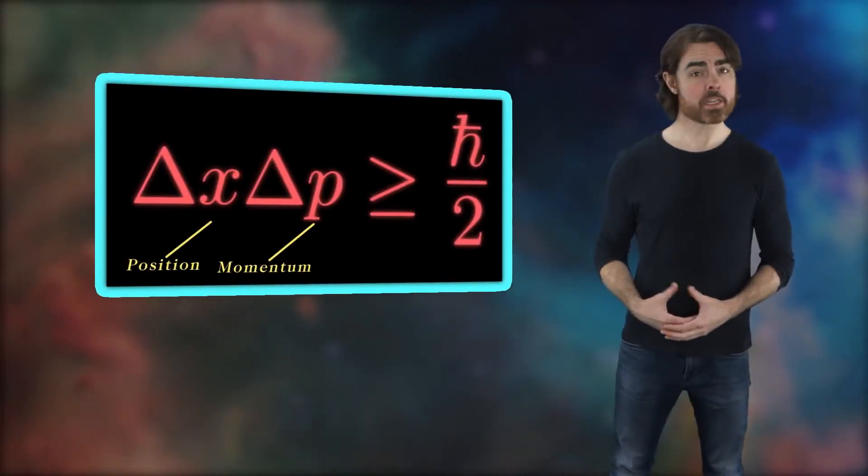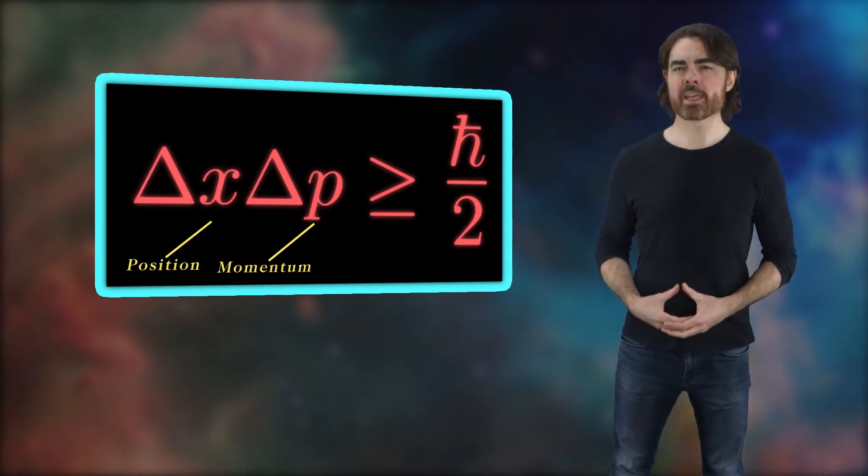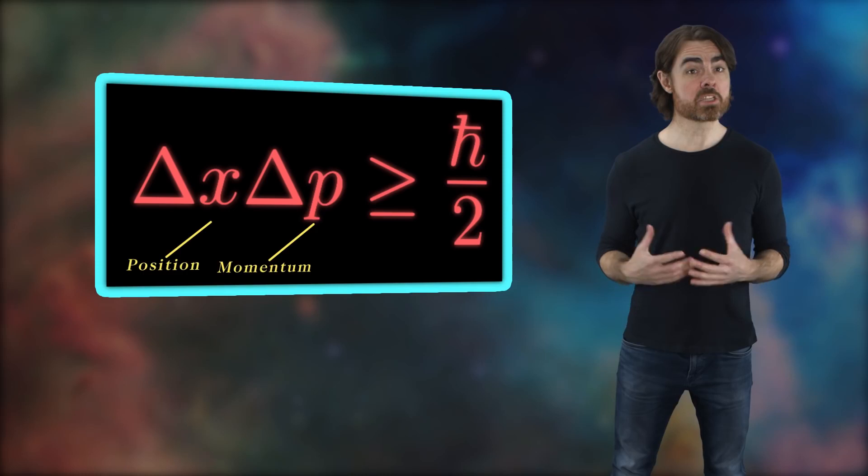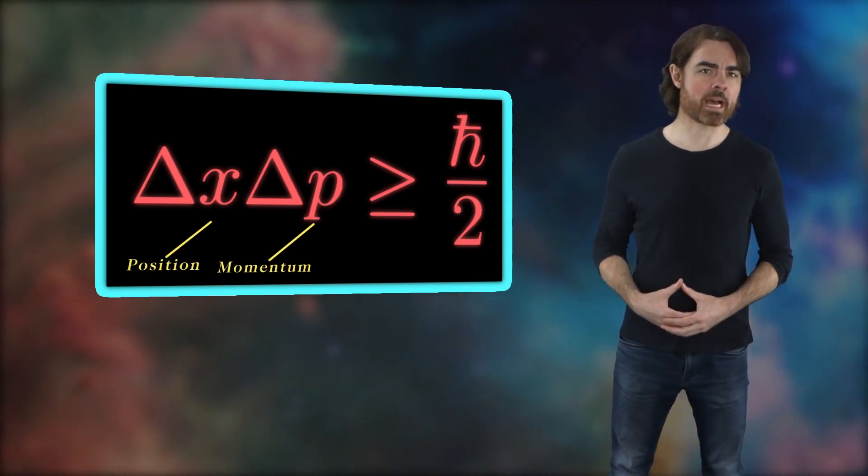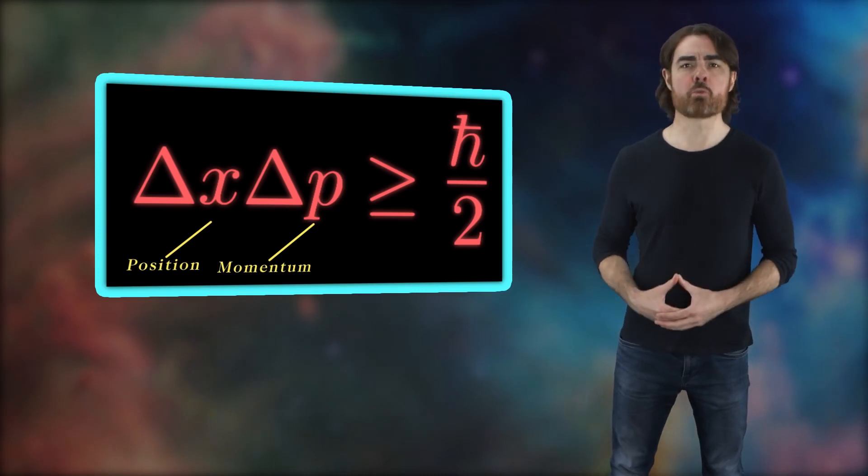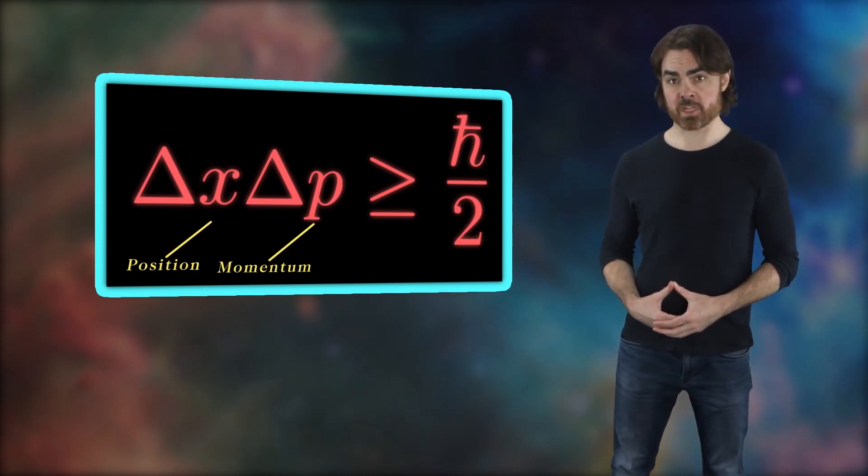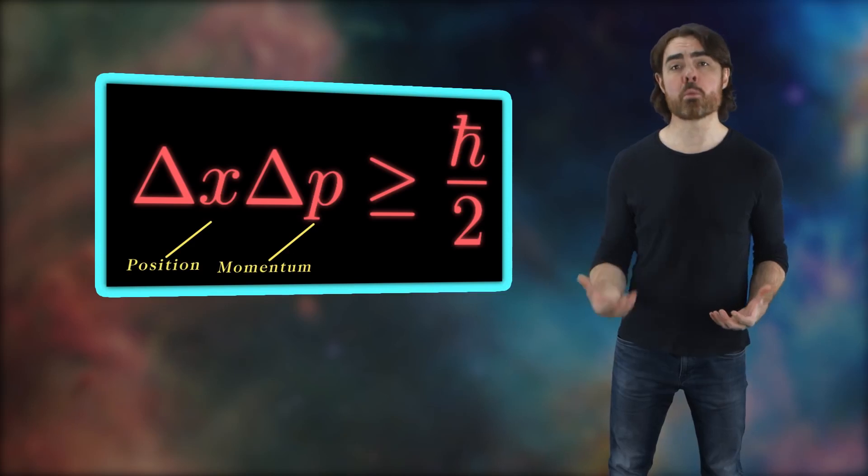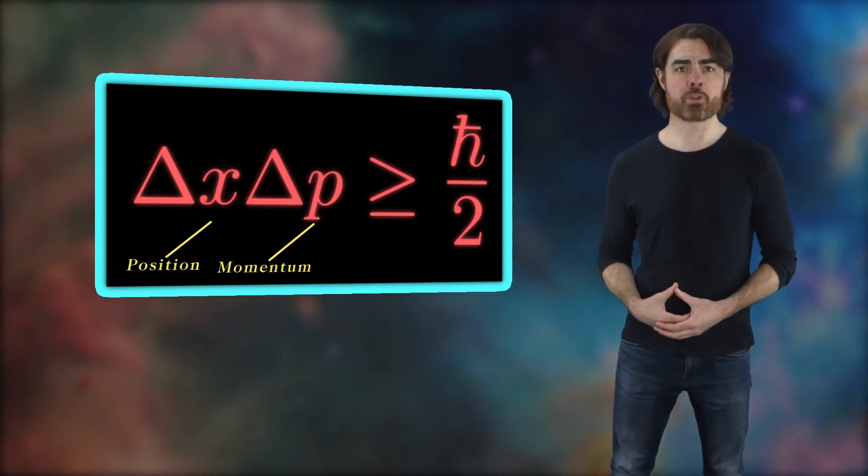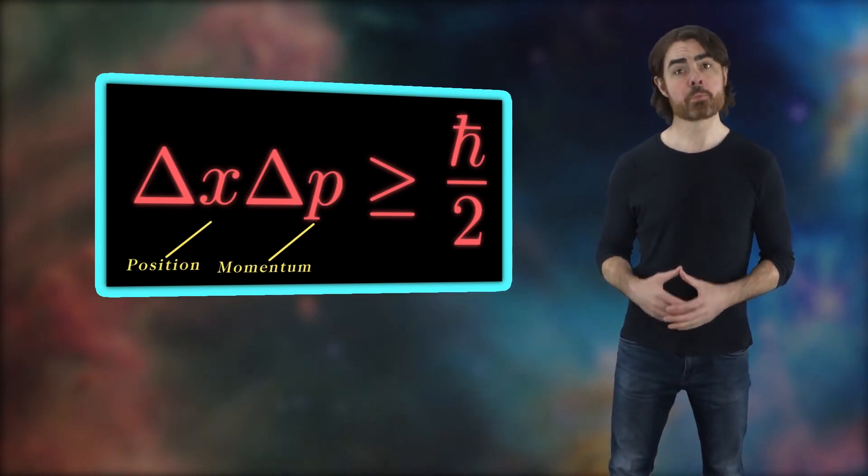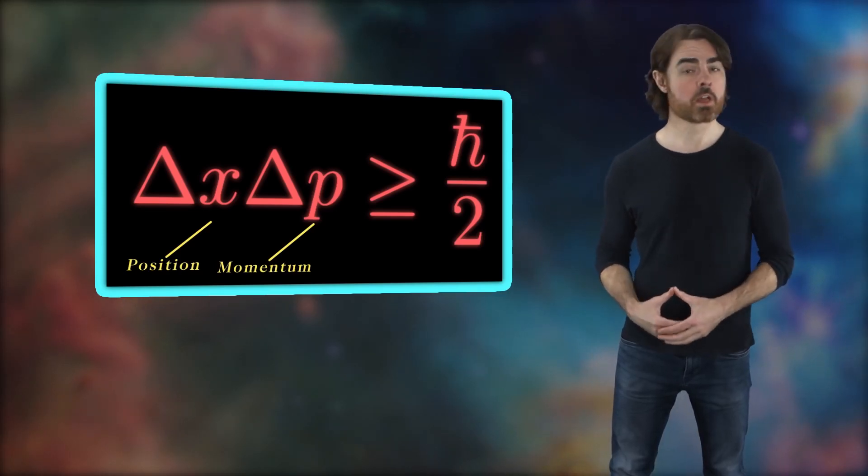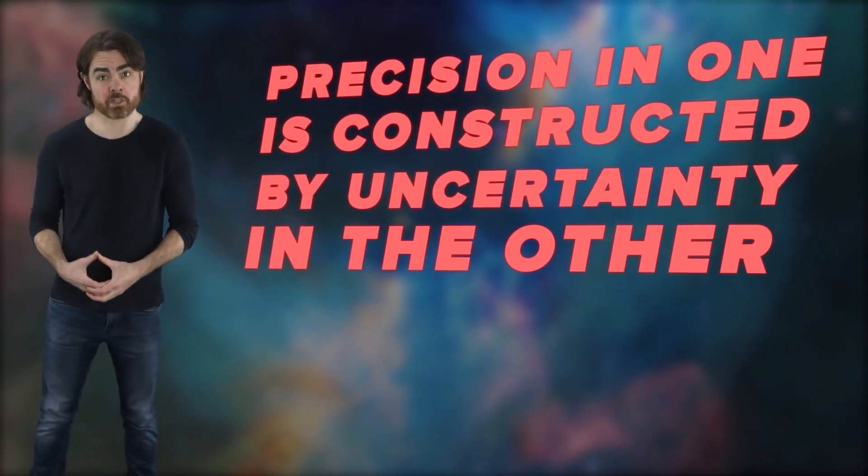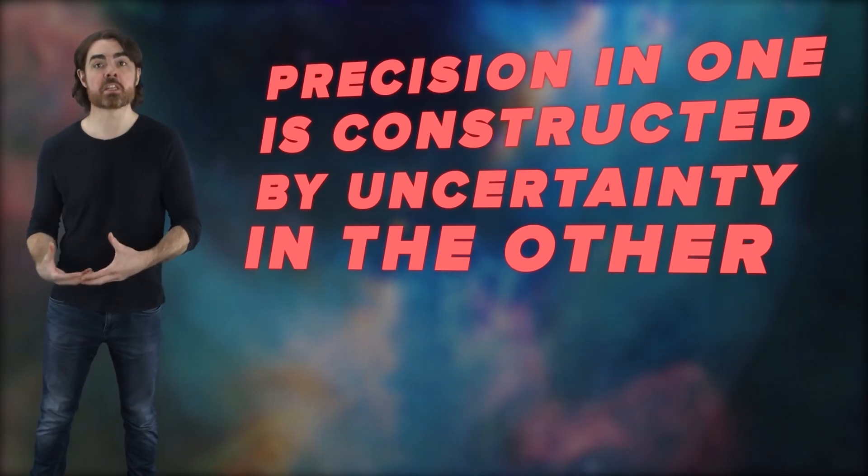So that's exactly the uncertainty principle. It's a statement about how much of a quantum system's information is accessible at a fundamental level. It's an unavoidable outcome of describing particles as the superposition of waves, waves that can be represented in terms of either position or momentum. The fact that both can't be known simultaneously with perfect precision is a property of the nature of the wave function itself. Precision in one is actually constructed by the uncertainty in the other.